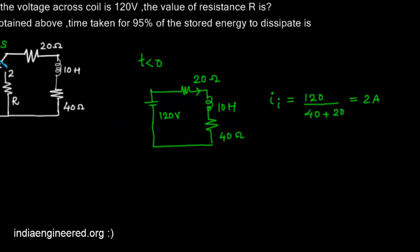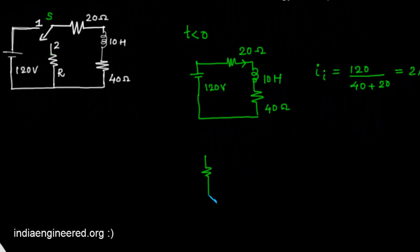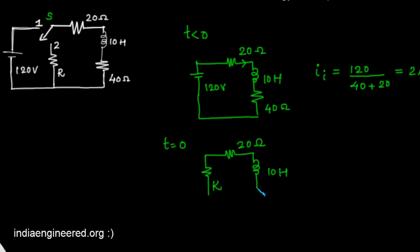At t equal to 0 plus, the switch is moved to position 2. The equivalent circuit now has R ohms, 20 ohm, 10 henry inductor, and 40 ohm resistance. The current through the inductor at t equal to 0 plus will be the same as at t equal to 0, because current cannot change abruptly through an inductor. So we have 2 amperes of current flowing.